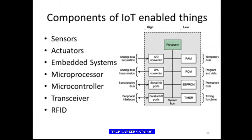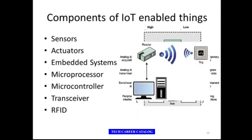RFID — radio frequency identification — is very important. It is a technology that uses radio waves to identify items, identifying which particular thing is communicating with which entity. It is increasingly becoming an enabling technology for IoT. The main elements of RFID are systems and tags. RFID tags and readers come in a variety of shapes, sizes, functionality, and cost. RFID readers acquire and sometimes rewrite information stored on RFID tags. These are the actual components used in IoT.